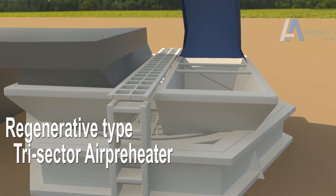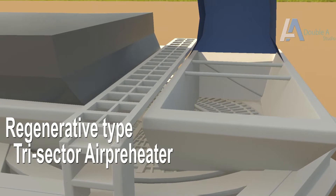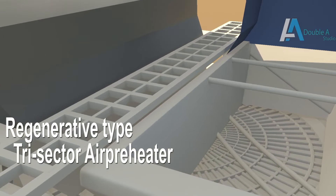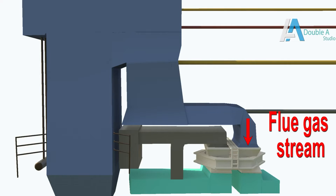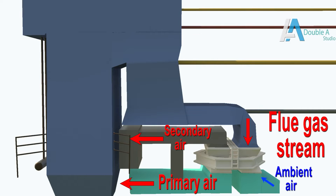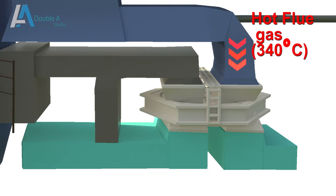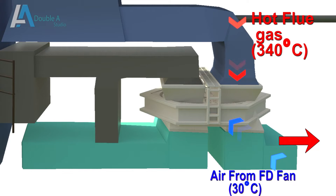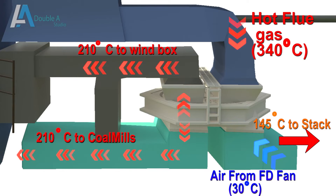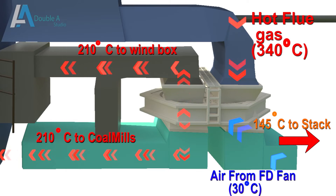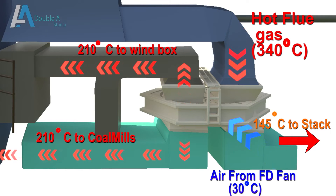In large thermal power plants, regenerative type tri-sector air pre-heaters are used. The term tri-sector stands for a single flue gas stream and two outstreams of air called primary and secondary air. While passing through the air pre-heater, heat exchange takes place from hot flue gases to colder ambient air — inlet air absorbs heat and gets heated up. After exiting the air pre-heater, the hot stream of air is divided into two parts: primary air and secondary air. The FD Fan must provide sufficient quantity of air for both streams.